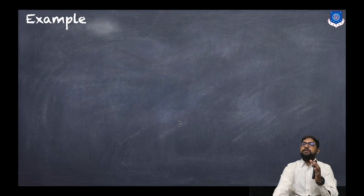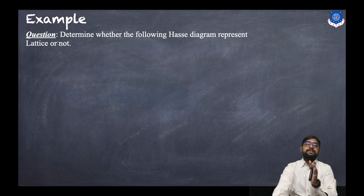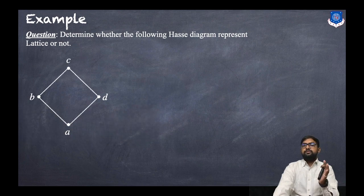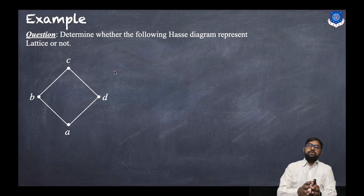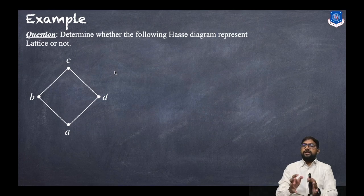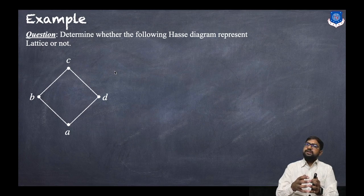Now let us discuss an example. The question is: determine whether the given Hasse diagram represents a lattice or not. To check whether it is a lattice, we need to have LUB and GLB for each and every pair. We will create a GLB table and a LUB table and check.